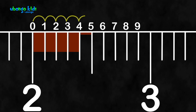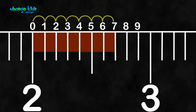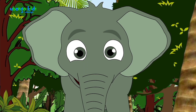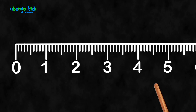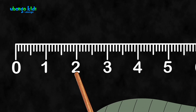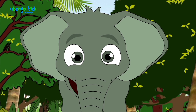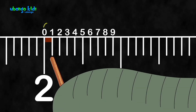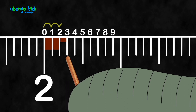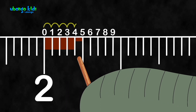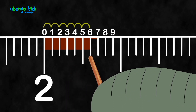2.5, 2.6, 2.7! So the digits after the decimal place represent those parts. 1, 2, 3, 4, 5 — those are whole numbers. 1, 2, 3, 4, 5, 6, 7.